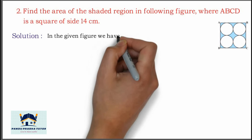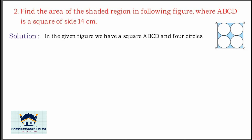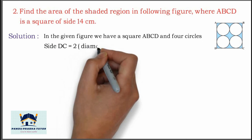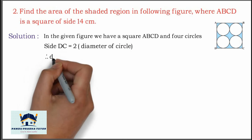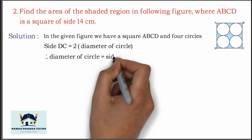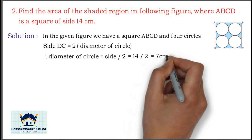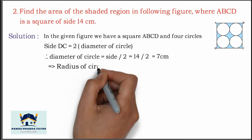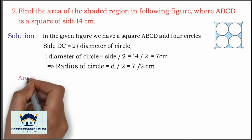In the given figure, we have square ABCD and 4 circles inside it. The side of the square is equal to 2 times the diameter of a circle. Therefore, diameter of each circle equals side divided by 2, which equals 14 divided by 2, equals 7 cm. This implies radius of the circle equals 7 by 2 cm.